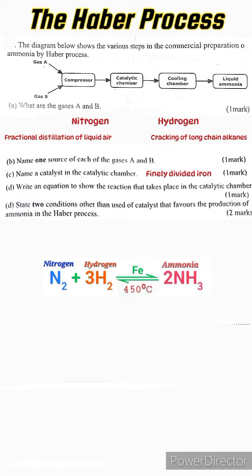Part e: State two conditions other than use of catalyst that favors the production of ammonia in the Haber Process. Condition number one: high pressure. Another condition: low temperature. And that is question one, so this was a bit of a warm-up.